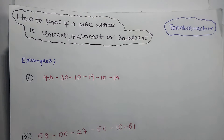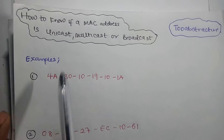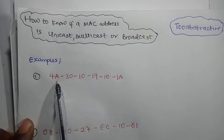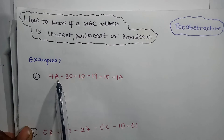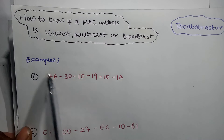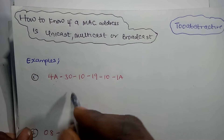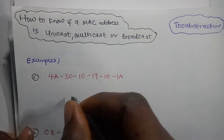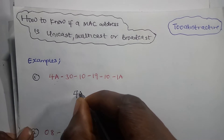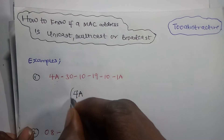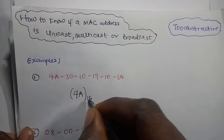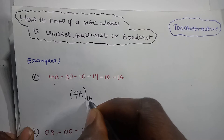Let's try that same principle here. Our main target is this. As you can see, the first byte is actually 4A. So we say 4A. And 4A means that it is in base 16, because we are having 4A here. This is base 16.